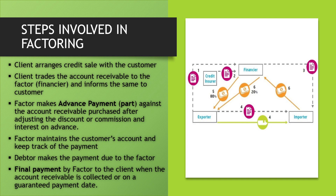Steps involved in factoring: Step one — the client concludes a credit sale with the customer, meaning the seller sells goods or services to the purchaser or customer. Step two — the client sells the account receivable to the factor or financer and notifies the same to the customer. On one side, he supplies goods or services to the importer or purchaser; on the other side, he sells the account receivable to the factor.